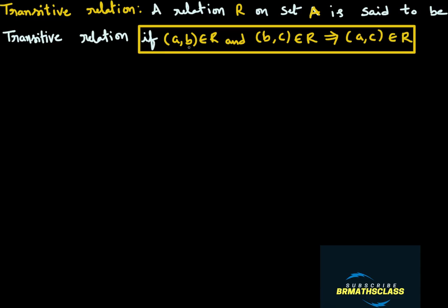Try to understand here: if there exists an ordered pair (A,B) and (B,C), observe in these two ordered pairs — the first ordered pair ends with B, and the second ordered pair starts with B. You have to choose such ordered pairs in the relation R. If there exist such ordered pairs in R, then we check that ordered pair (A,C) is there in the relation or not. If (A,C) is there, then we say that relation is a transitive relation.